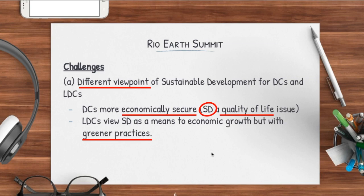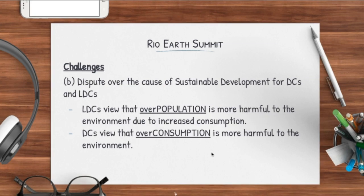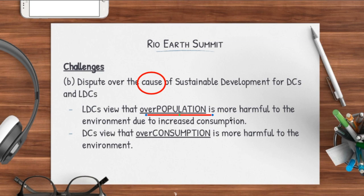Another challenge was a dispute over the actual cause driving the need for sustainable development. Less developed countries viewed overpopulation as the main harmful reason why the environment was being worsened, because of increased consumption. Overpopulation in LDCs is apparent due to poor education leading to high birth rates. With a growing population and limited financial resources, environmental degradation occurs — for example, the need to chop down more trees to feed the growing population.